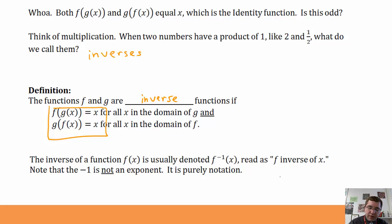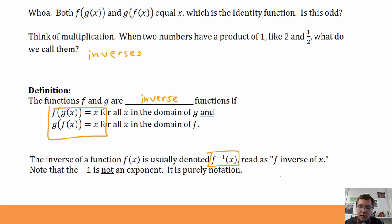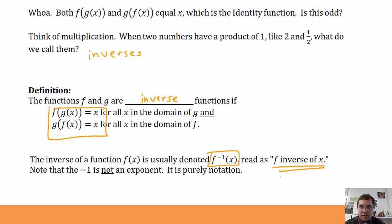The inverse of a function f of x is usually denoted f inverse of x, written with a superscript negative 1. The negative 1 is not an exponent — it does not act as an exponent at all. It is purely notation to denote the inverse of f.